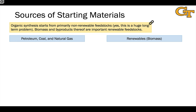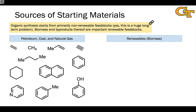There are basically two sources of starting materials for organic synthesis. The major source is non-renewable feedstocks from things like petroleum, coal, and natural gas — fossil fuels. This is a huge long-term problem because this feedstock will eventually run out. From fossil fuels we get things like simple alkenes, simple alkynes, simple aromatic compounds like benzene and small substituted benzenes like phenol and toluene, some polycyclic aromatic compounds like naphthalene, cyclic hydrocarbons like cyclohexane, and nitrogen-containing heterocycles like pyridine.